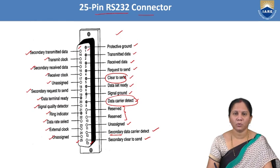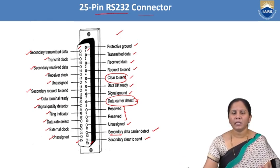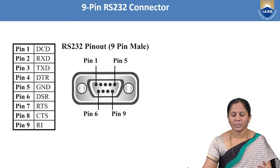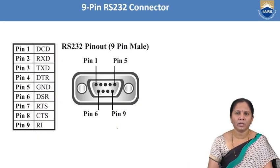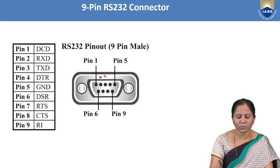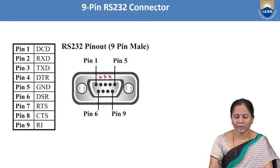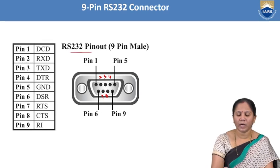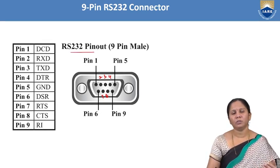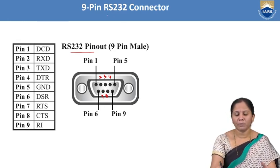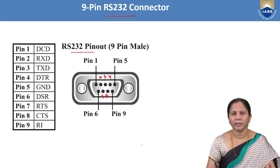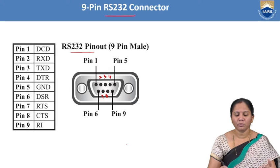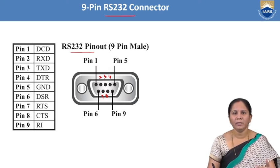This is the 25-pin RS-232 connector. Generally, we use the 9-pin RS-232. The 9-pin RS-232 cable has pins 1 through 9. RS-232 is available in both 25-pin and 9-pin versions. We will discuss the 9-pin RS-232 cable in detail — the function of each signal and how DTE and DCE communicate using this cable.